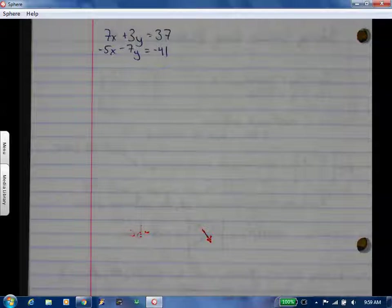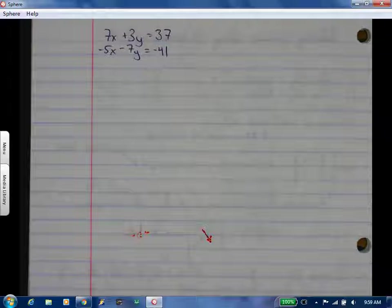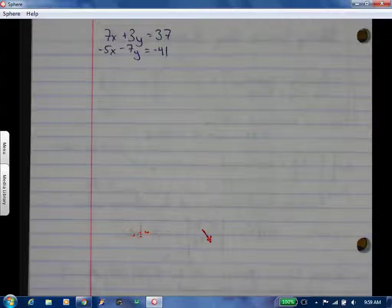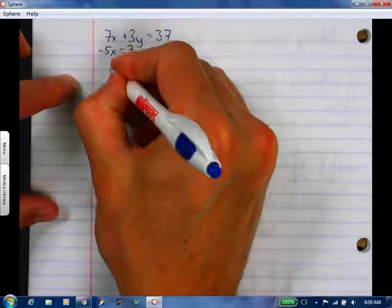You don't want to use your calculator because you lose your game. I gave up on my game, I can't do it. So you're going to start with what they call the coefficient matrix: 7, 3, negative 5, negative 7.